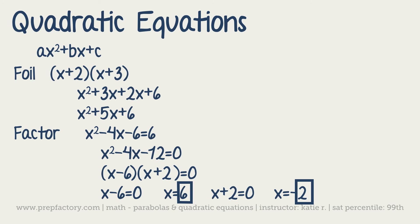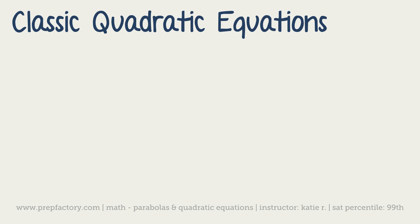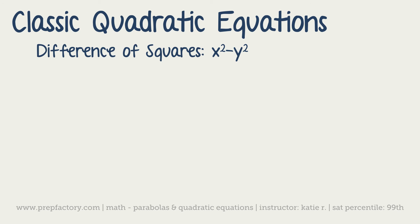They'll ask you to foil or factor quite often. An interesting note: when you factor, you're finding x-intercepts — where x is a number and y is 0. There are also classic quadratic equations you'll see repeatedly. The first is the difference of squares: x² - y² factors as (x + y)(x - y), since the xy and -xy terms cancel out.